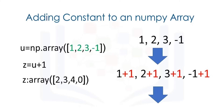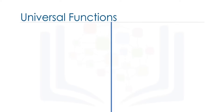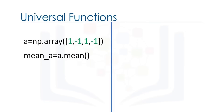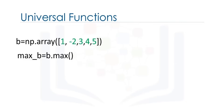This property is known as broadcasting. A universal function is a function that operates on ND arrays. We can apply a universal function to a NumPy array. Consider the array a — we can calculate the mean or average value of all elements using the method mean. In this case, the result is zero. For example, consider the NumPy array b — we can find the maximum value using the method max. The largest value is 5, so the method max returns 5.